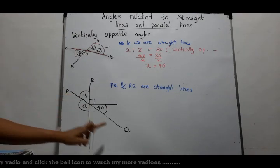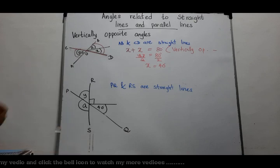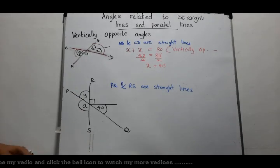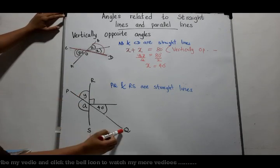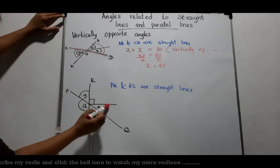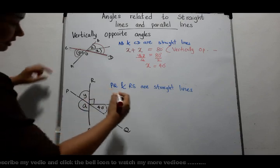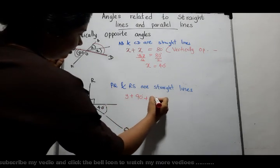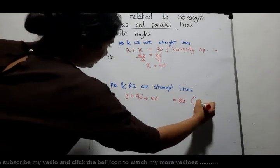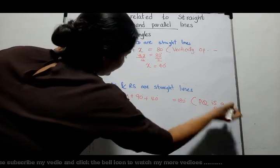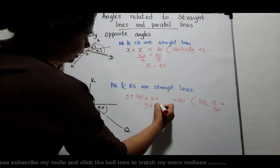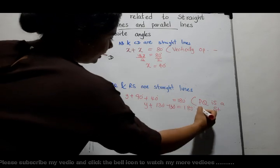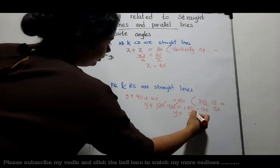Next example: PQ and RS are straight lines. There are two unknown angles, Y and A. Consider straight line PQ: Y plus 90 degrees plus 40 degrees equals 180 degrees. Reason: PQ is a straight line. So Y plus 130 equals 180 degrees. Removing 130 from both sides, Y equals 50 degrees.